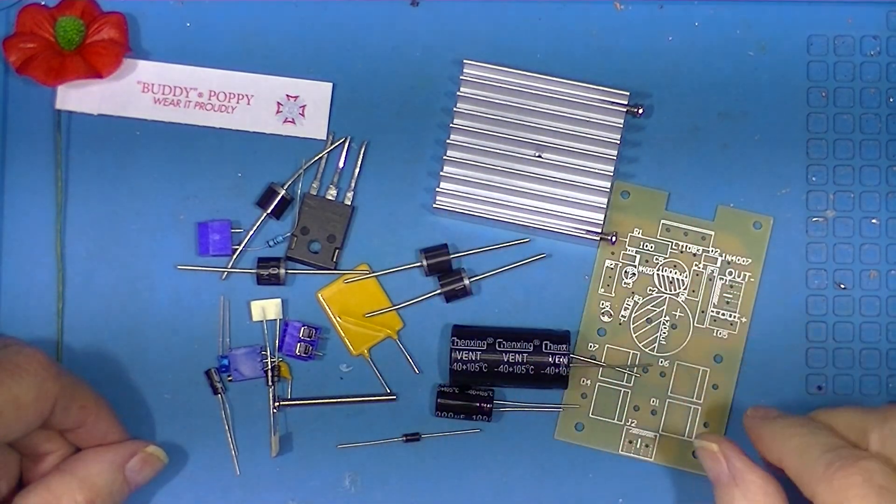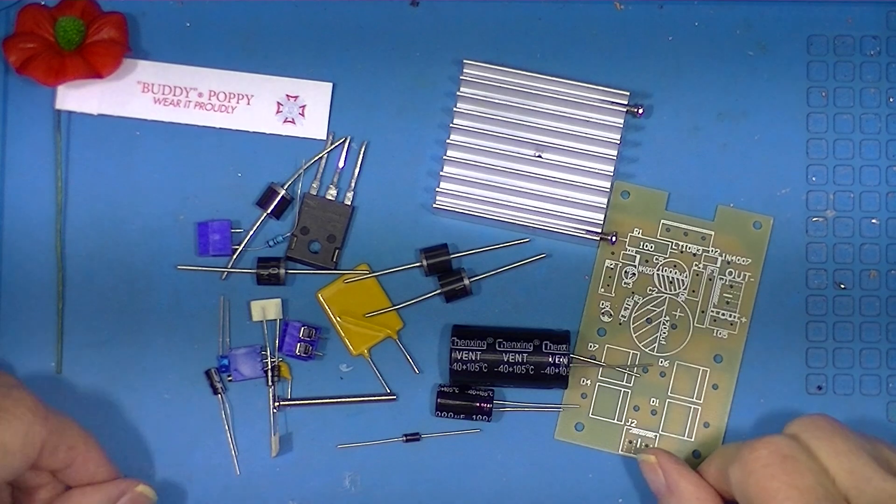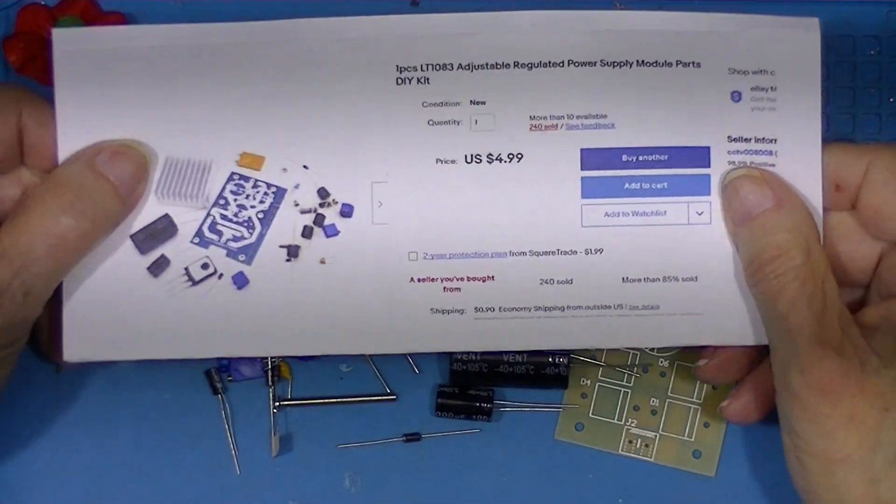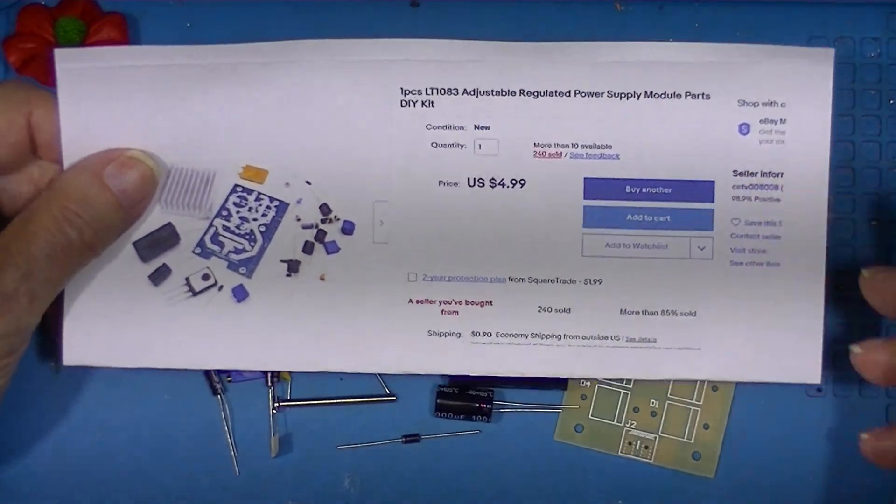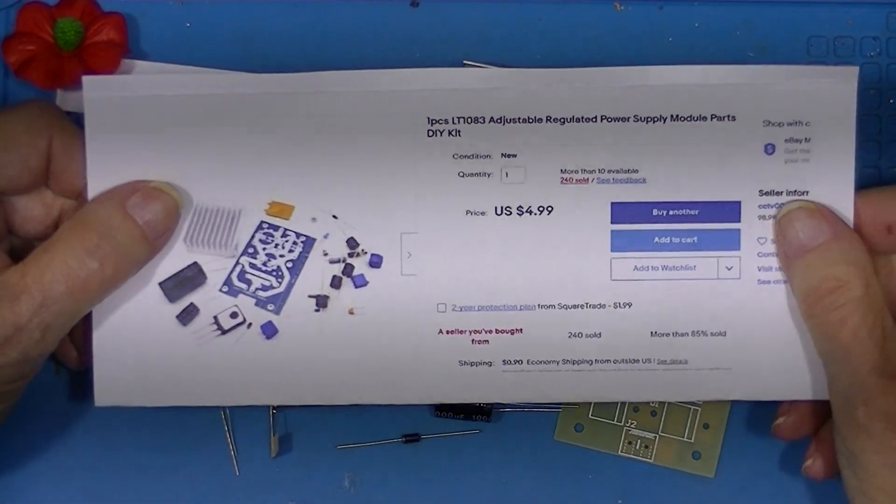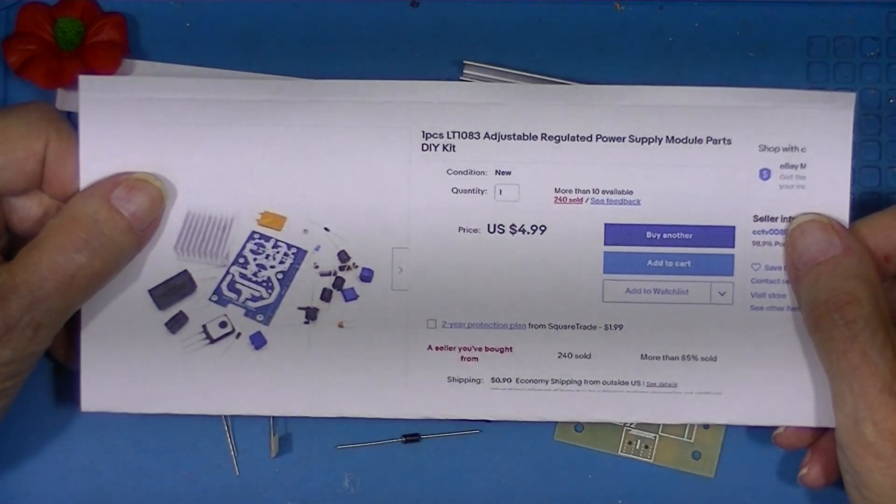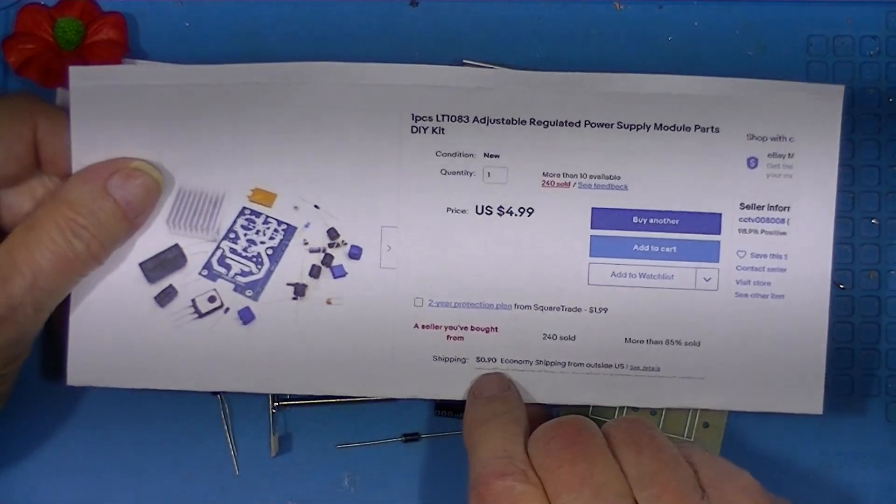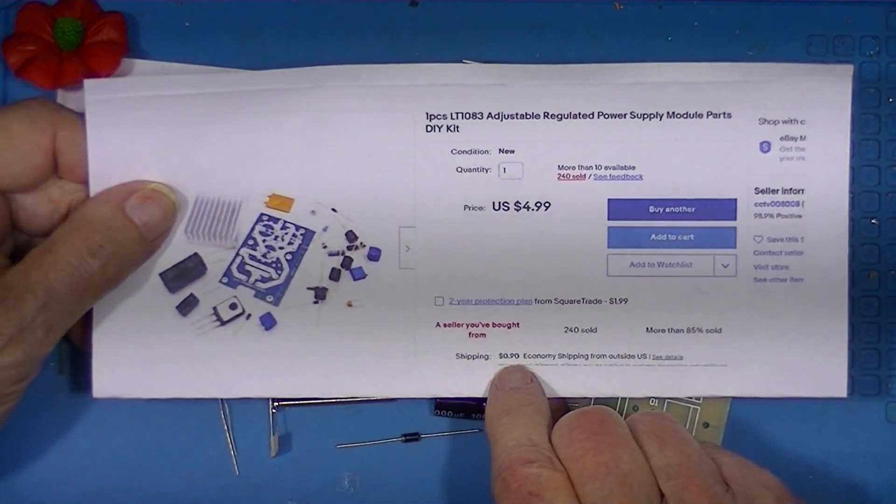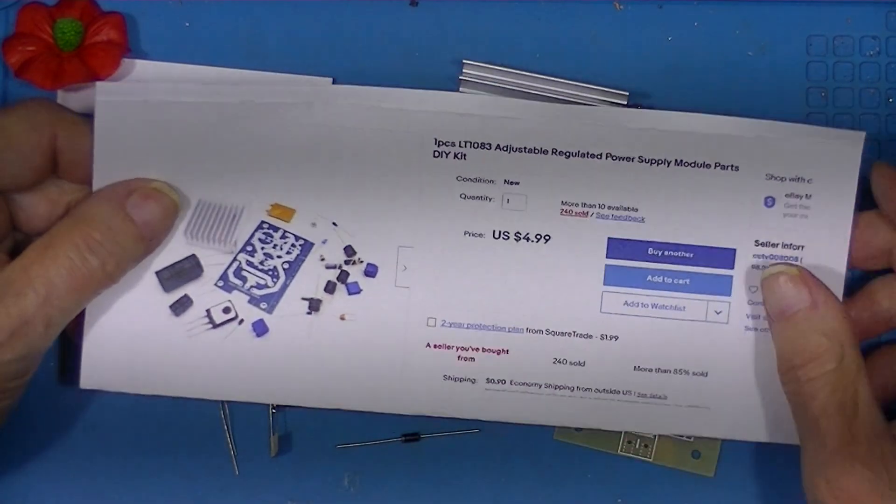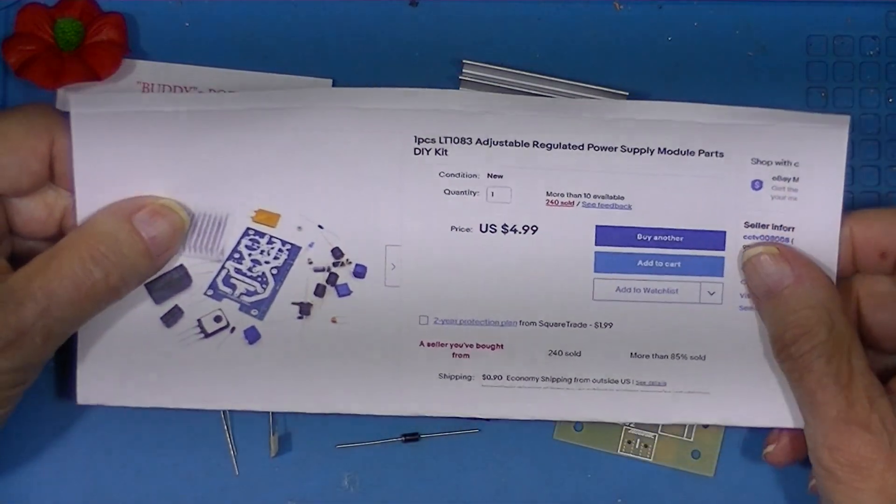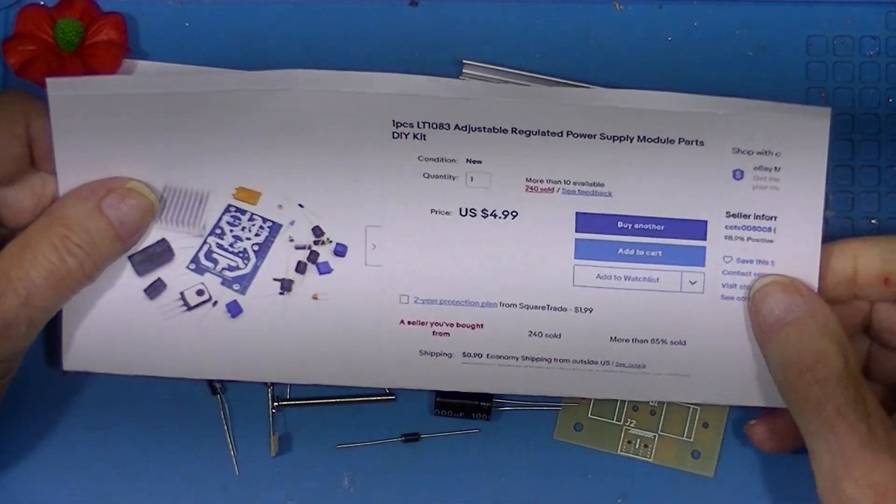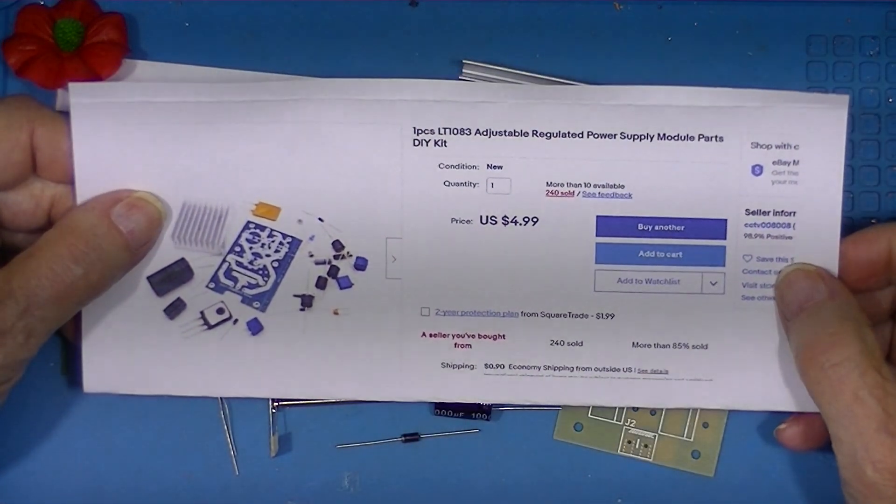These scattered parts and circuit board represent the contents of this kit. I opened it recently on a mail video. It's a $5 kit, actually if you order one you pay $0.90 shipping. I think I ordered three. I'm tired of building a kit and finding that something is amiss and I have to reorder it and build a second one.